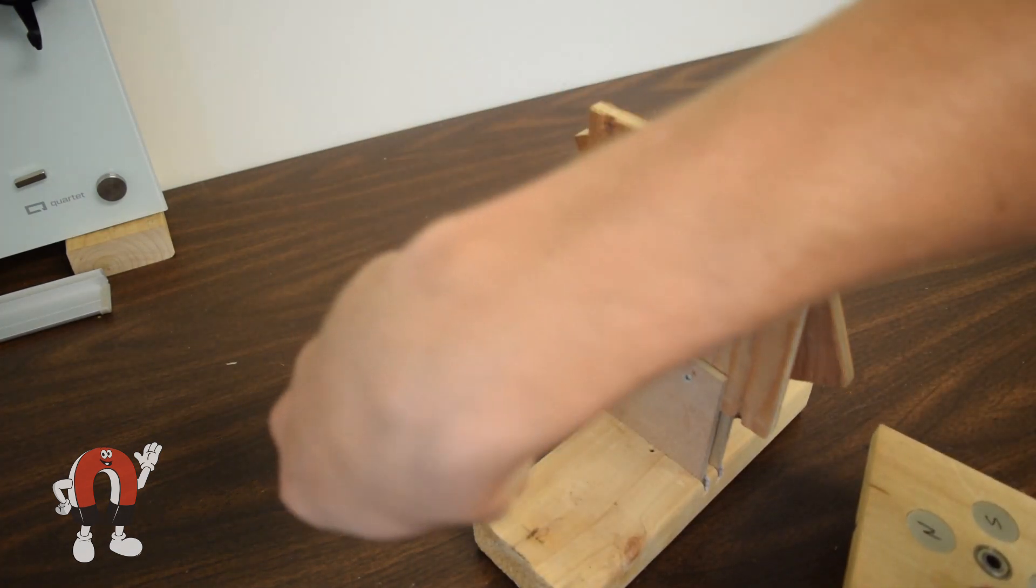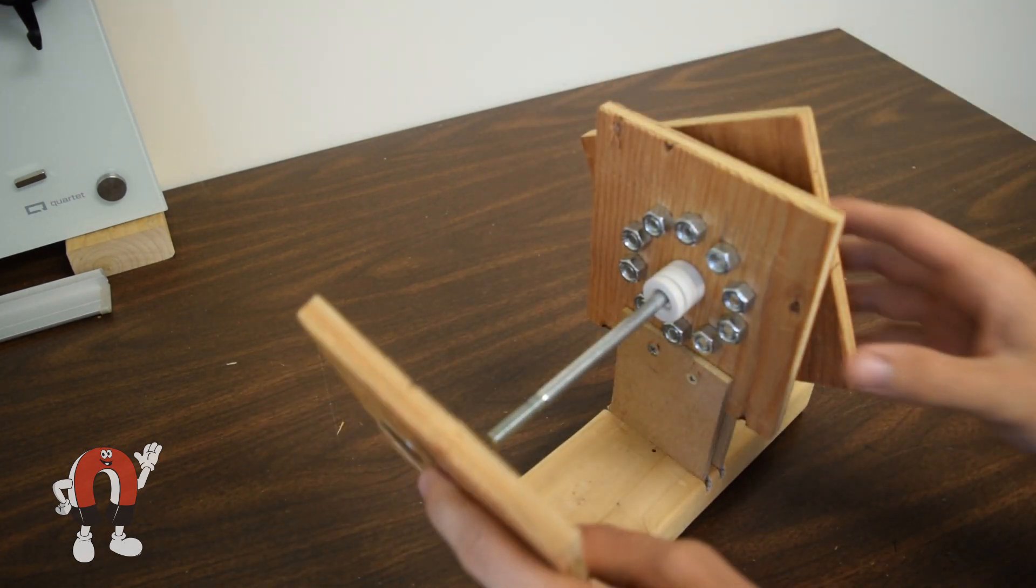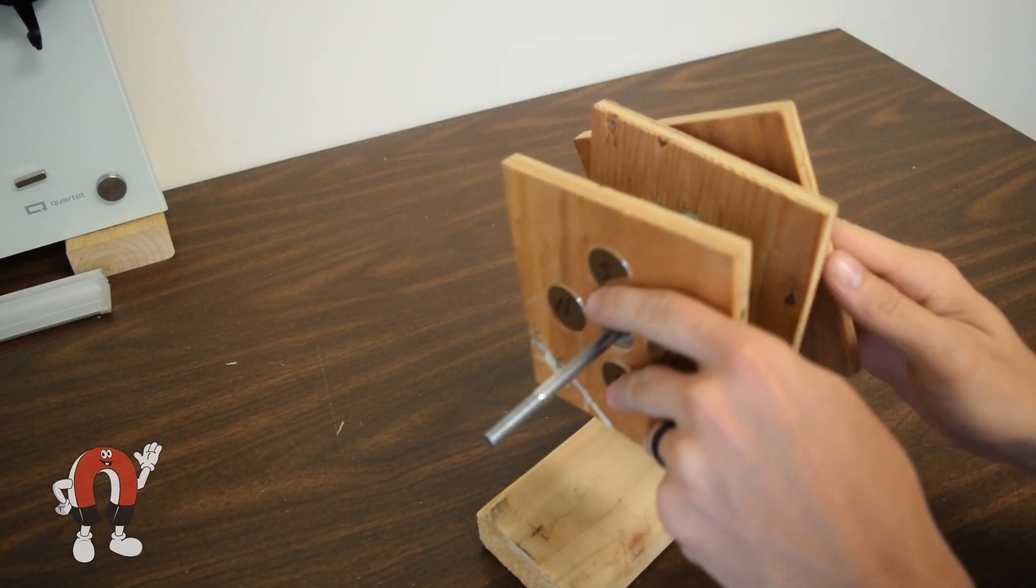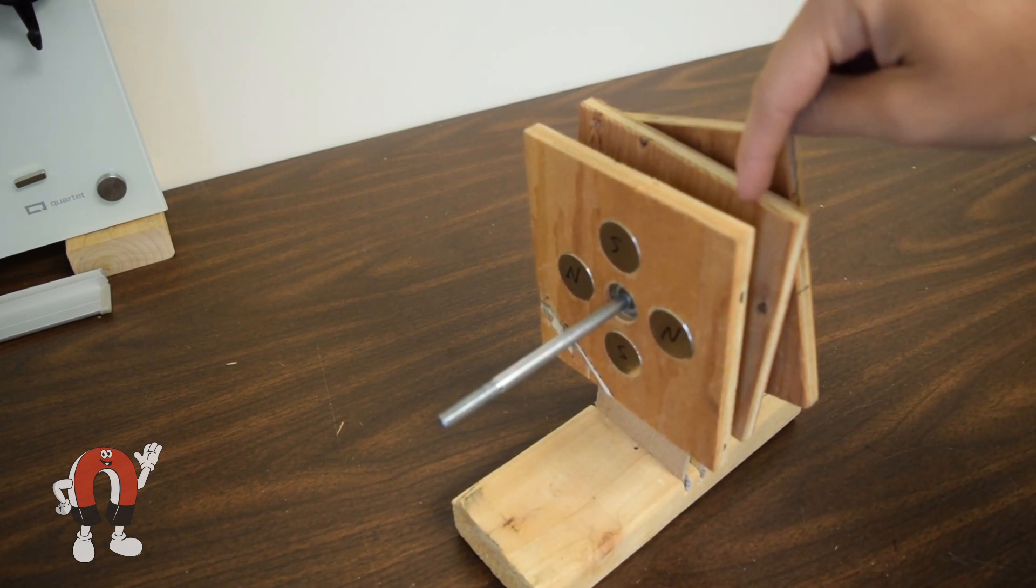Now we'll add the other gear, again using spacers. It took some testing to get the right spacing. If the larger, stronger magnets are too close to the nuts, there isn't enough torque from the other gear to overcome the pull force.